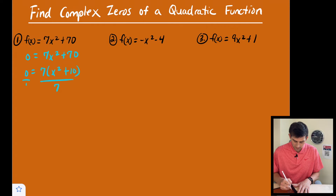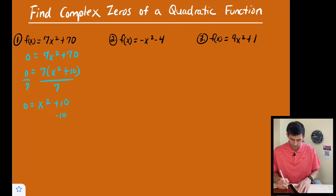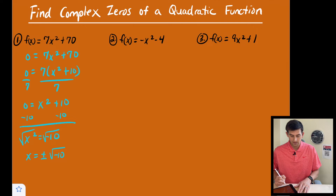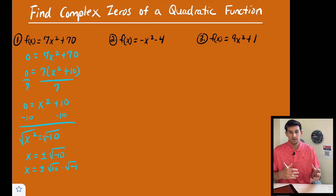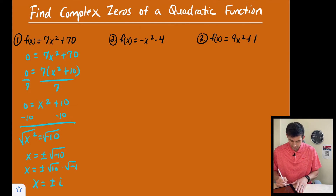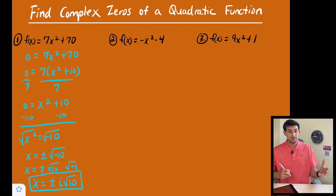We can divide both sides by seven because zero divided by seven is still zero. So now we just have zero equals x squared plus 10. If we subtract 10, we get x squared equals negative 10. Now we take the square root of both sides, so we get x equals positive or negative square root of negative 10. We can write this as square root of 10 times the square root of negative one, and that square root of negative one gives us i. So our two zeros are positive and negative i root 10.